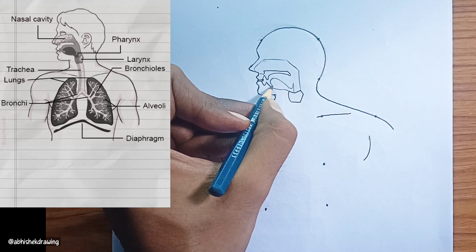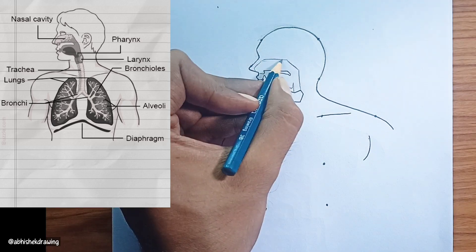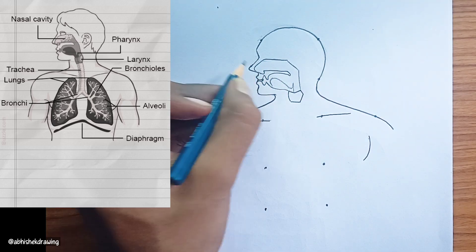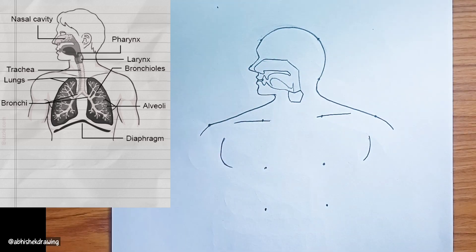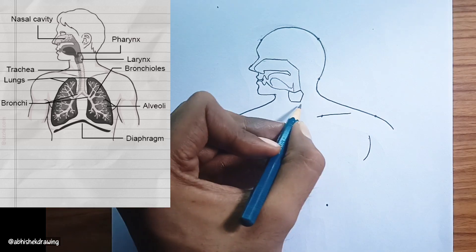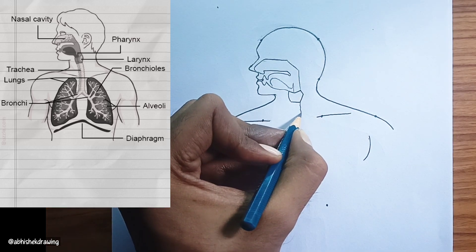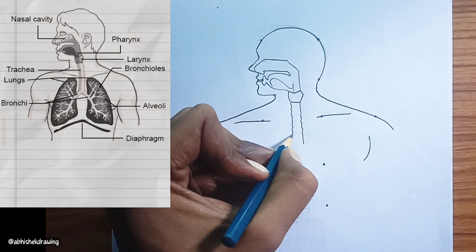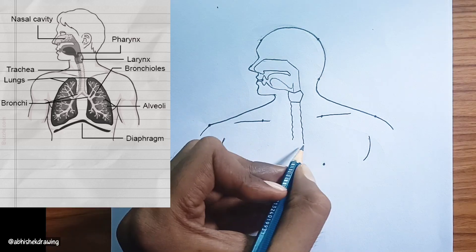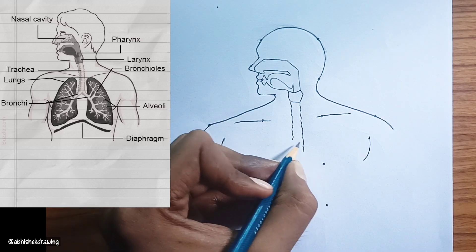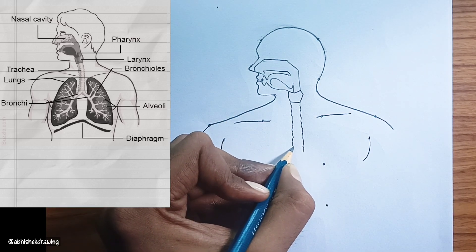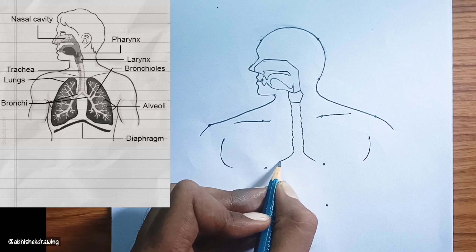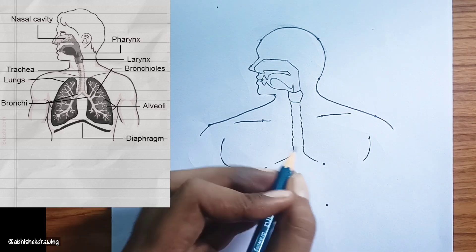Diaphragm. This is a large, dome-shaped muscle located at the base of the chest cavity, beneath the lungs. It plays a vital role in breathing. When the diaphragm contracts, it flattens, increasing the volume of the chest cavity and drawing air into the lungs. When it relaxes, it moves upward, reducing the volume and pushing air out of the lungs.